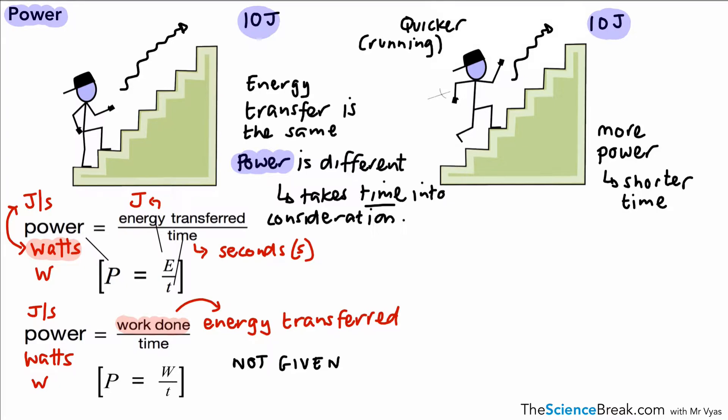The unfortunate thing about these two is that we aren't given these on our equation sheet, so you do need to memorize them. One thing I want to go through quickly is the idea of power ratings on appliances. Here we've got a speaker, and imagine this was a hundred watt speaker. What does that exactly mean? Well, it means because watt means joules per second, it means that the speaker transfers a hundred joules of energy per second.